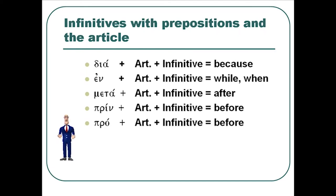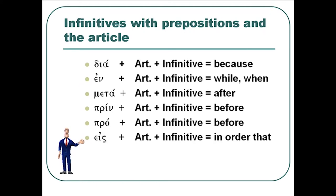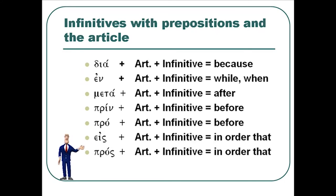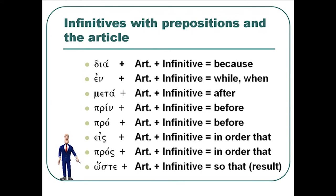Here is a list of preposition + article + infinitive combinations: dia plus the article plus infinitive means 'because' (causal); en plus the article plus infinitive is 'while' or 'when' (temporal); meta plus article plus infinitive is 'after'; prin plus article plus infinitive is 'before'; pro plus article plus infinitive is also 'before.' En, meta, prin, and pro all take this temporal sense. Eis plus article plus infinitive means 'in order that' (purpose); pros plus article plus infinitive also means 'in order that.' Hōste plus article plus infinitive means 'so that' or 'with the result that' — taken in a result sense.